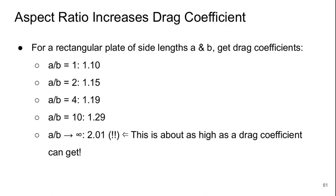We can look at rectangular plates with various aspect ratios with side lengths a and b to get drag coefficients and look at the impact that this has. If the aspect ratio is 1, we get pretty much similar to the circular flat plate with a drag coefficient of 1.1. And then as we increase the aspect ratio, the drag coefficient goes up.